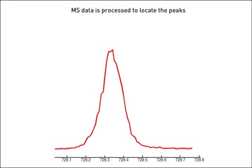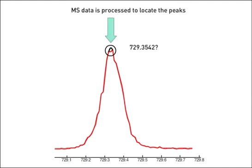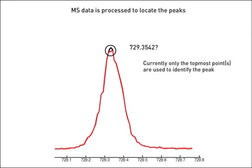The instrument must be calibrated using one or more known standard ions before accurate mass results can be obtained. The standard ions are measured and their peak location is determined. Accurate location of the peaks ultimately determines how well the calibration performs. Current approaches typically use only the topmost points of the monoisotope peaks to identify the peak's mass position.